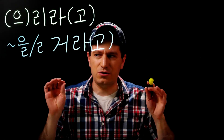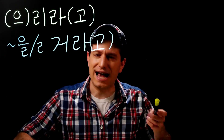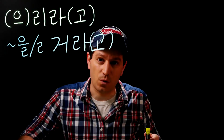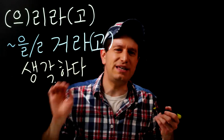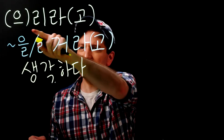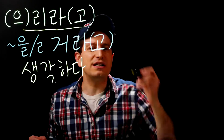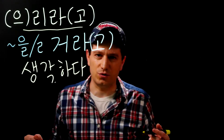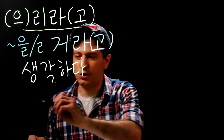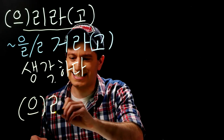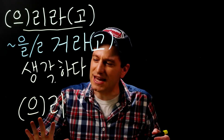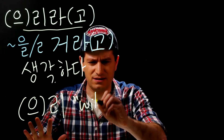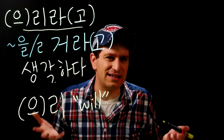To save you time, this is actually a different version of the future tense form — to think that something will be a certain way. So this is basically a future tense form, but it's used to show that you think or believe that something will be a certain way. The 을이라 part itself is literally like making an assumption or a guess about something, like saying something will be, or even 'I guess that,' 'I think that something.'